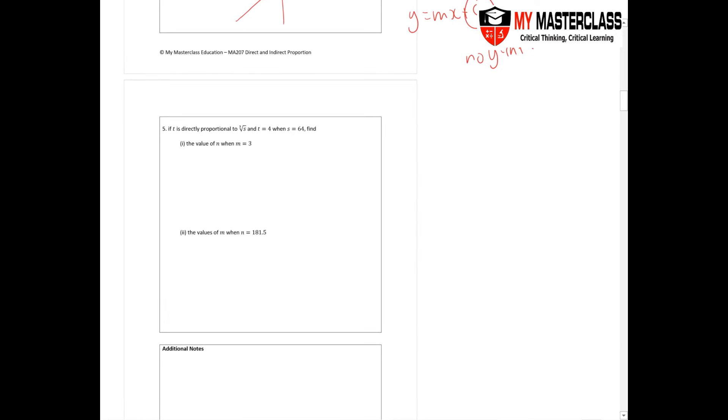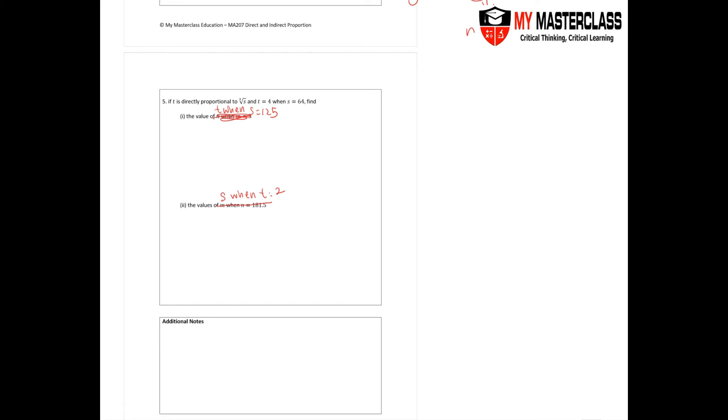Now for question 5, if T is directly proportional to the cube root of S, and T equals 4 when S equals 64, find the value. I actually did some amendment because the question had a little bit of error. So T equals to k times the cube root of S. Let's sub the values in: you have 4 equals k times cube root of 64. Now cube root of 64 will actually give you a 4, so 4k equals to 4, k equals to 1.